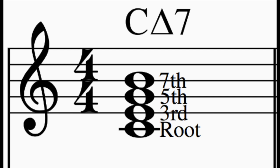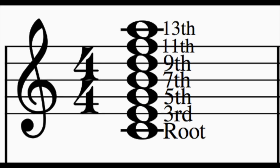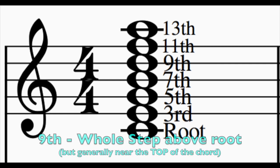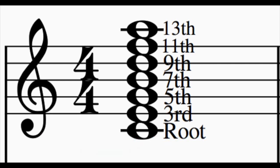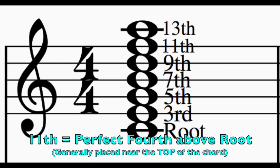However, we can now add the nine, eleven, and thirteen to any chord. The ninth of the chord is a whole step above the root, although it is generally placed near the top. The eleventh of the chord is a perfect fourth above the root, although this is also generally near the top.